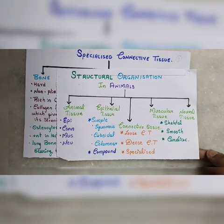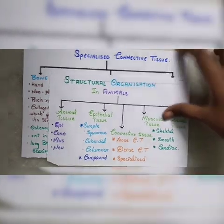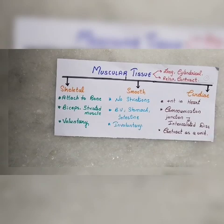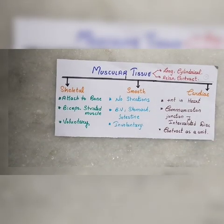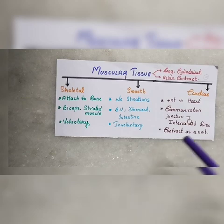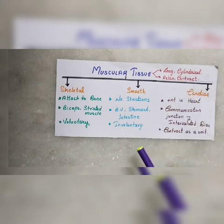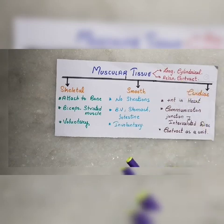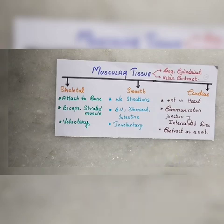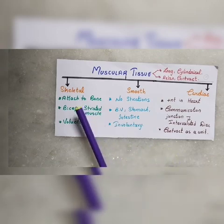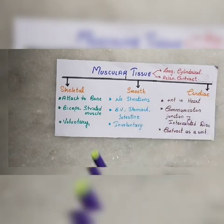Next is muscular tissue. Muscular tissue has three subtypes: skeletal muscle, smooth muscle, and cardiac muscle. Muscle fibers are long and slender. Muscles contract and relax, and this is the main function of muscle tissue.